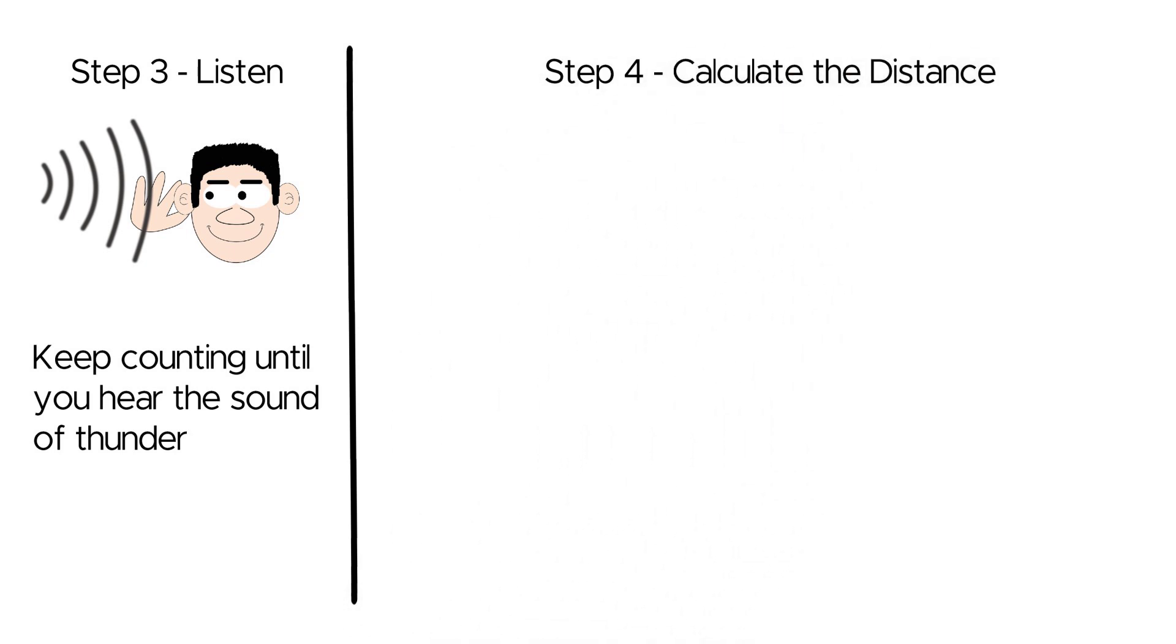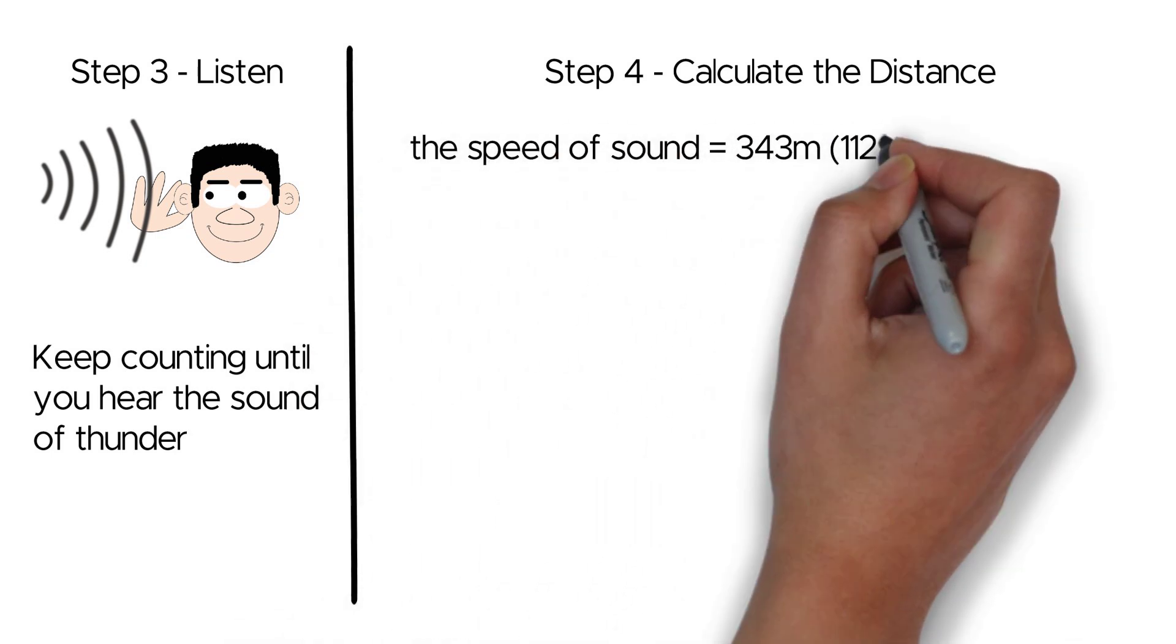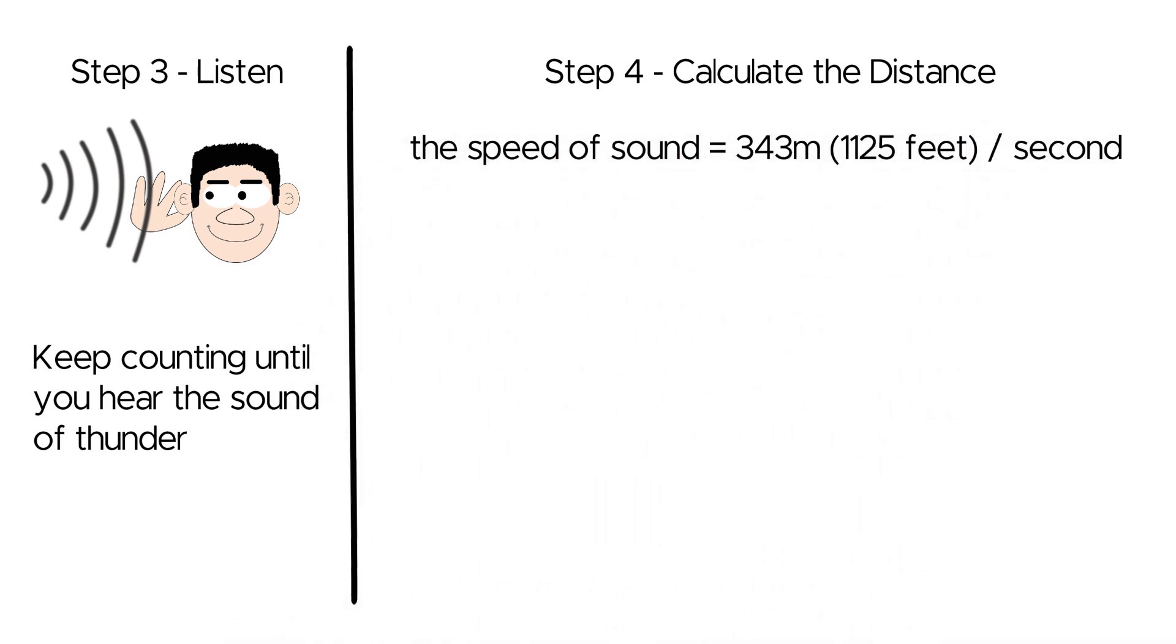We all know that sound travels through the air at a certain speed, known as the speed of sound. In dry air at room temperature, the speed of sound is approximately 343 meters per second, which is about 1,125 feet per second. This speed varies depending on factors like temperature and humidity, but for simplicity, we'll use this average value.